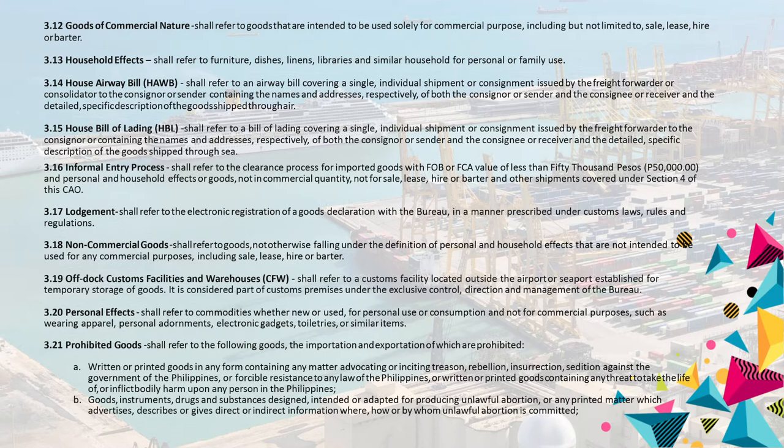3.13 Household Effects shall refer to furniture, dishes, linens, libraries, and similar household furnishings for personal or family use. 3.14 House Airway Bill (HAWB) shall refer to an airway bill covering a single individual shipment or consignment issued by the freight forwarder or consolidator to the consigner or sender, containing the names and addresses of both the consigner or sender and the consignee or receiver, and the detailed specific description of the goods shipped through air.